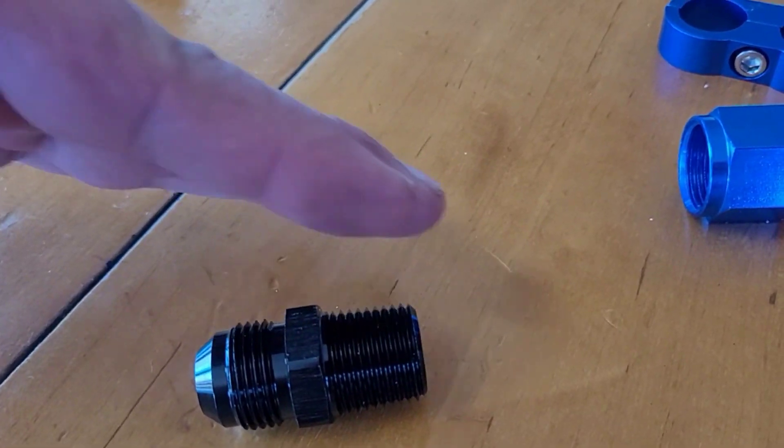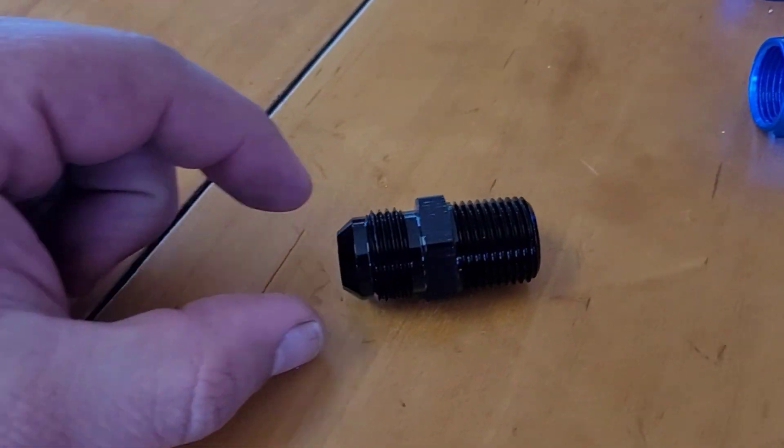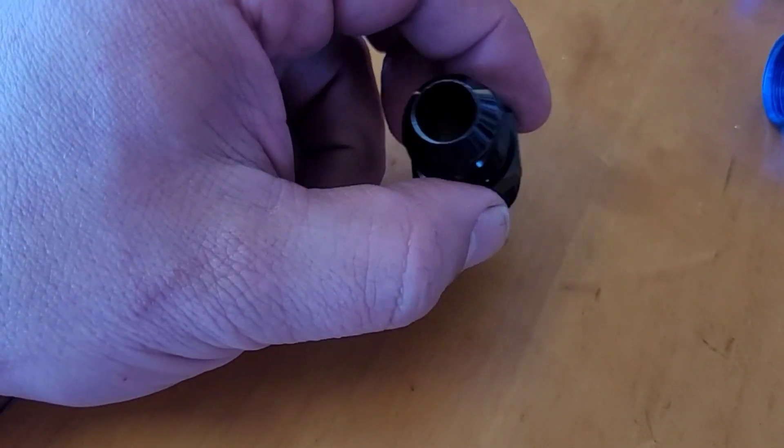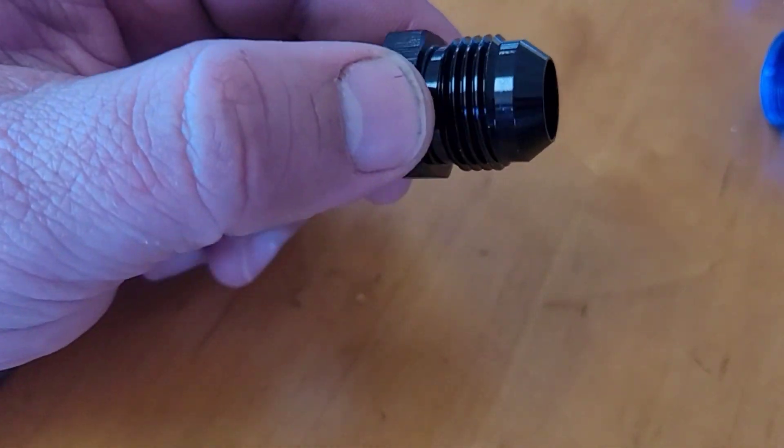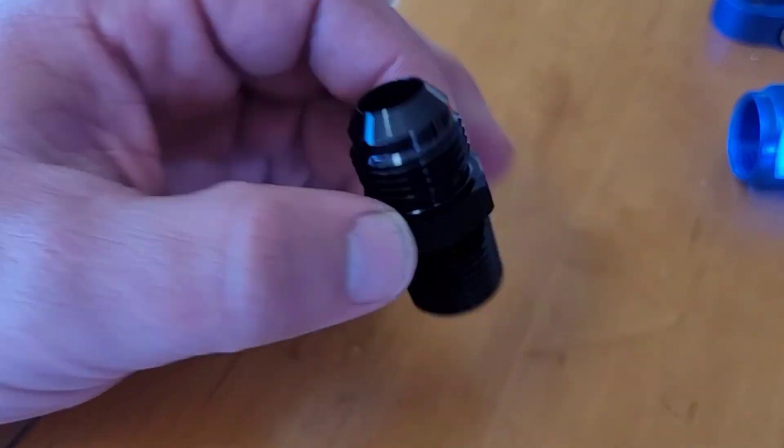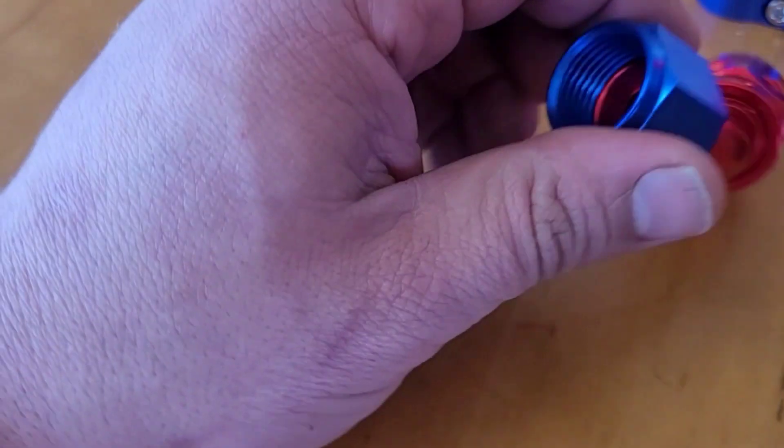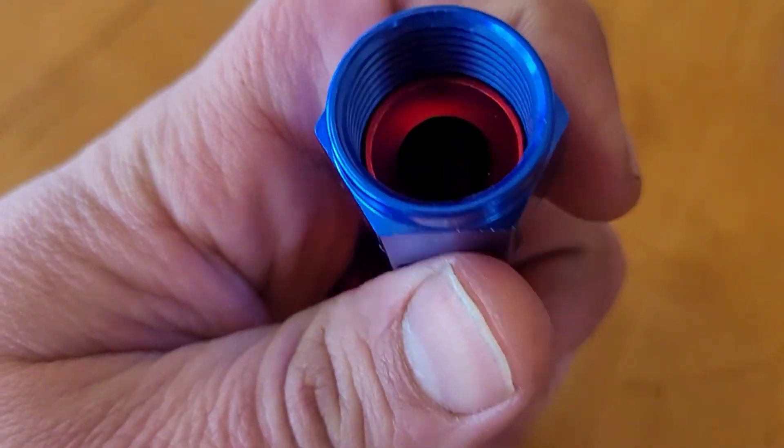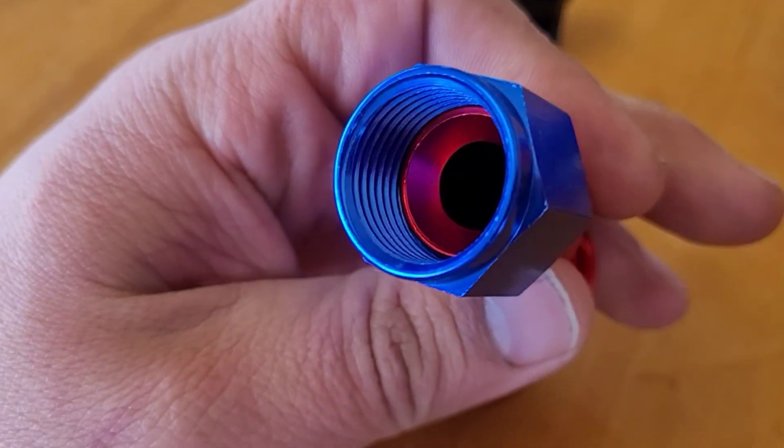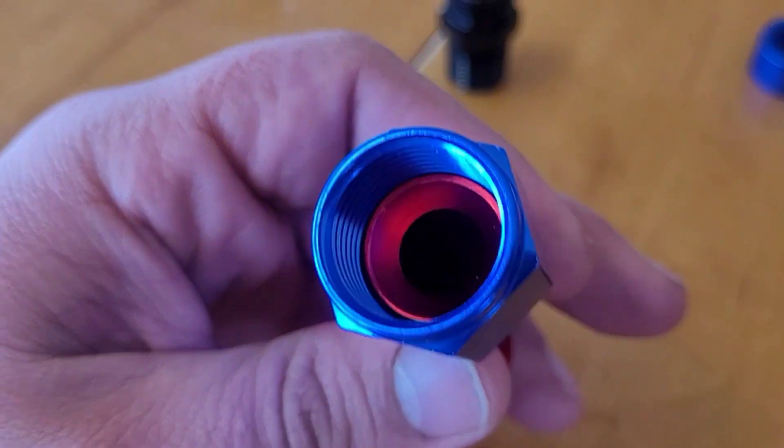This is the adapter. It's an NPT to an AN fitting. NPT seals on that first, where I just showed you with my hand, along the threads, kind of as a wedge. And then the AN seals on the taper on the end. You can see the receiving taper there, or the female side of it, where that will go together.